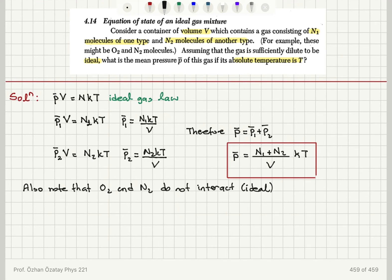We have used the ideal gas law separately to calculate the partial pressures of gas type 1 and gas type 2. The partial pressure of type 1 and the partial pressure of type 2, and the total pressure would be the sum of these two.